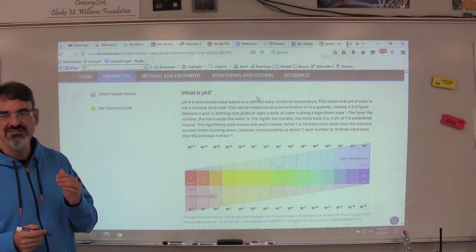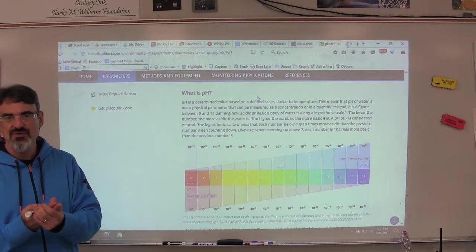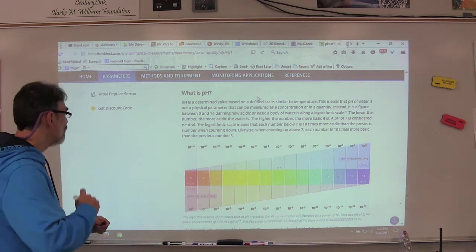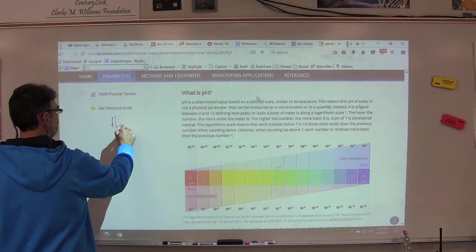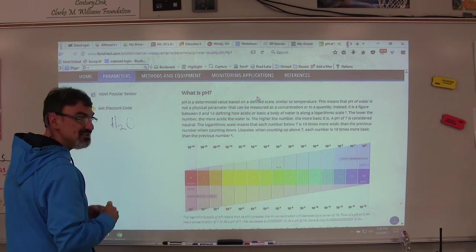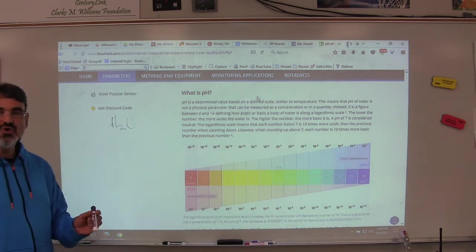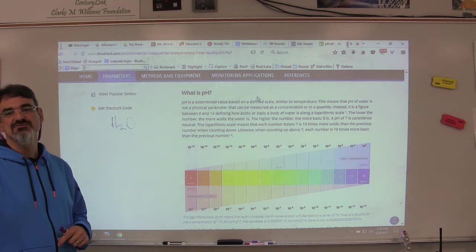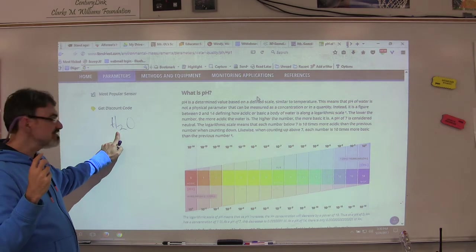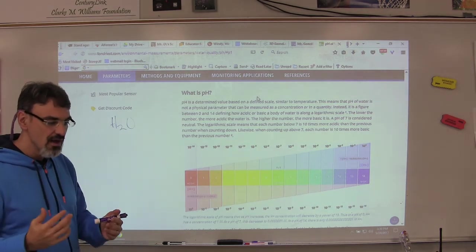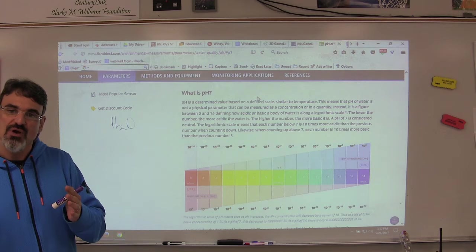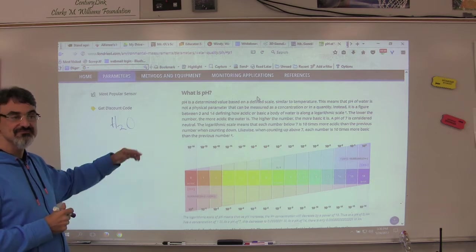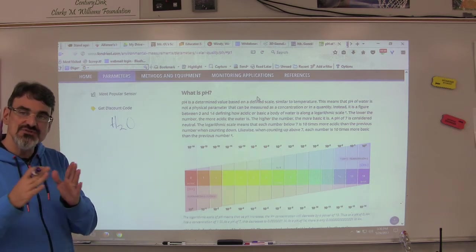The first thing you need to realize about pH is that it starts with water. We know that one molecule of water, the smallest particle or piece of water, is H2O. H2O means that one little tiny piece of water or molecule of water is made up of two hydrogens, one oxygen. One thing that happens in water is that those two hydrogens and that one oxygen tend to split up a little bit.